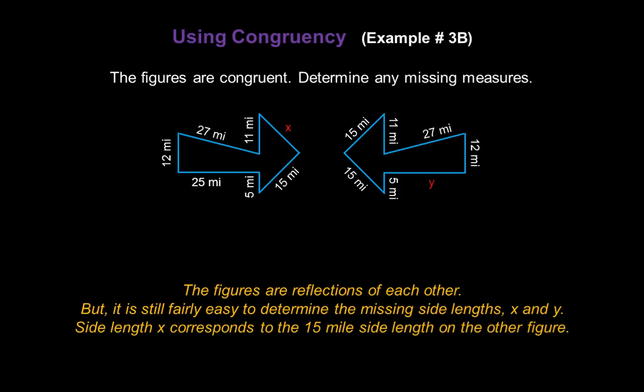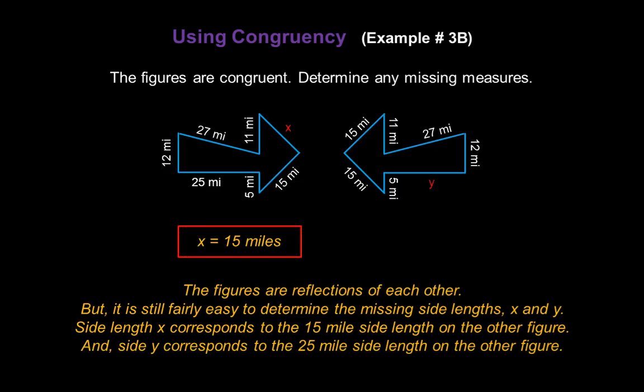Side length x corresponds to the 15 mile side length on the other figure, so x is 15 miles. And side y corresponds to the 25 mile side length on the other figure, so y is 25 miles.